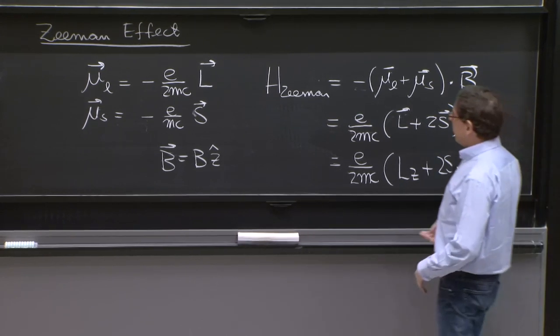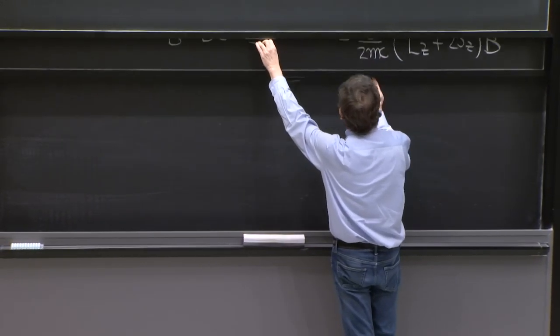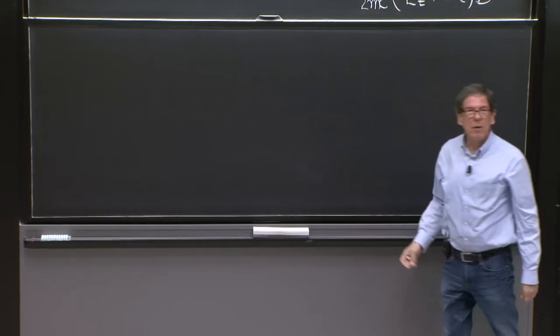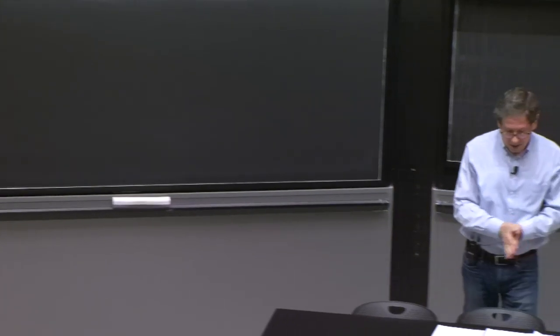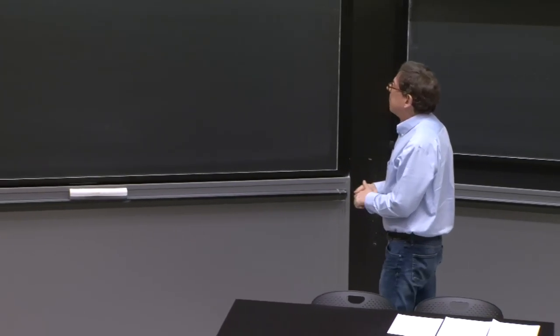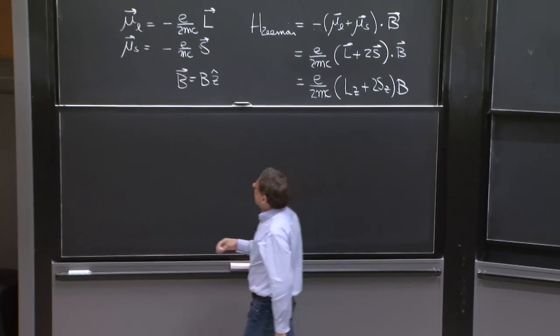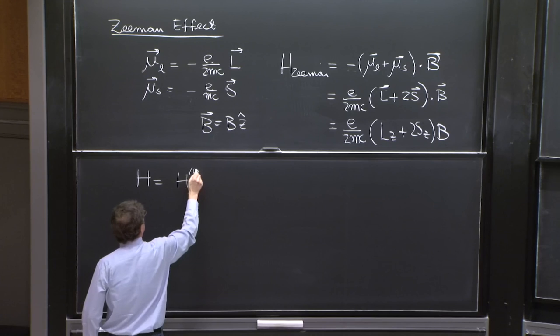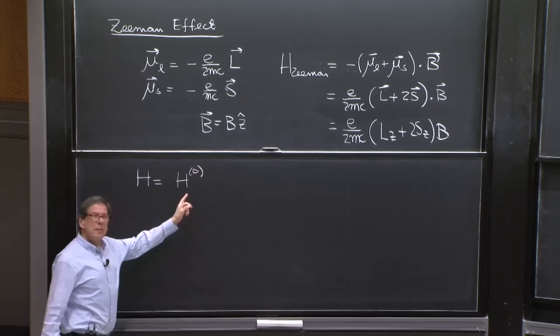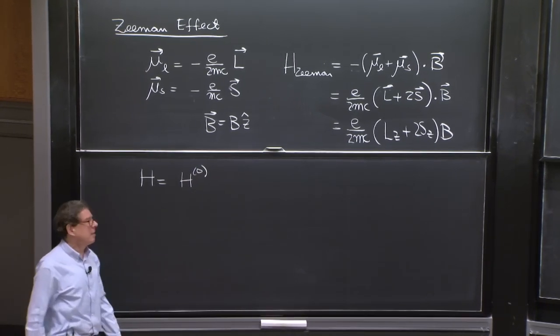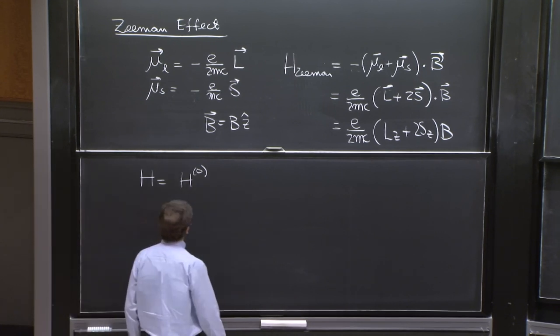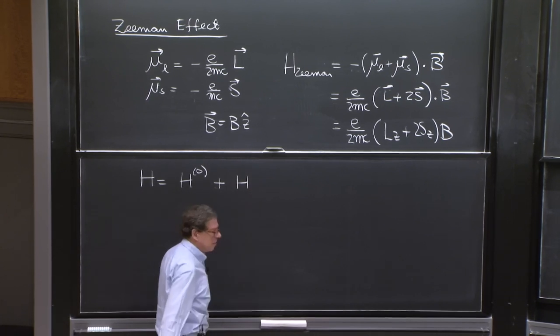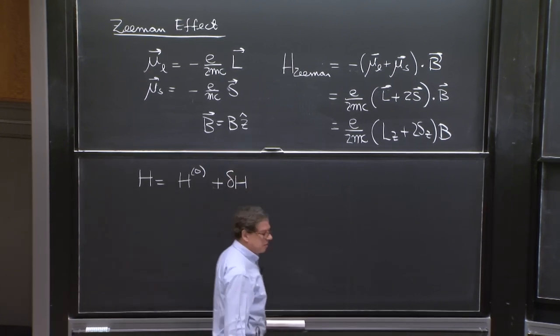But this is part of a story of an atom. So if we want to think of the hydrogen atom properly, we must consider and reconsider what was the Hamiltonian there. And we had an H for the hydrogen atom that was an H0. That was the familiar one, p squared over 2m minus e squared over r. Then we had a fine structure Hamiltonian, delta H fine structure.